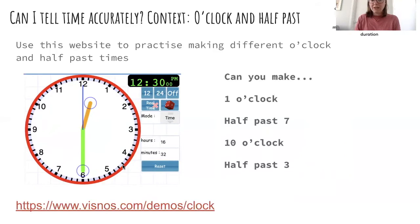This one we call an analog clock. It shows us the scale. You can see here like the little gradients, just like we've been looking at before for temperature and when we've been looking at measuring. And here shows us the digital time. So can you make one o'clock using the hands of the clock? Can you make half past seven, ten o'clock, and half past three? You can also make any time you like, but try and make these ones first using your hour hand and your minute hand.